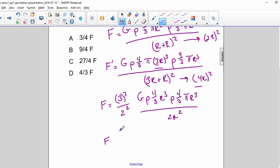So 3 cubed is 27 and 2 squared is 4 and the rest of this is simply the same as F. So our correct answer is C, 27 over 4F.